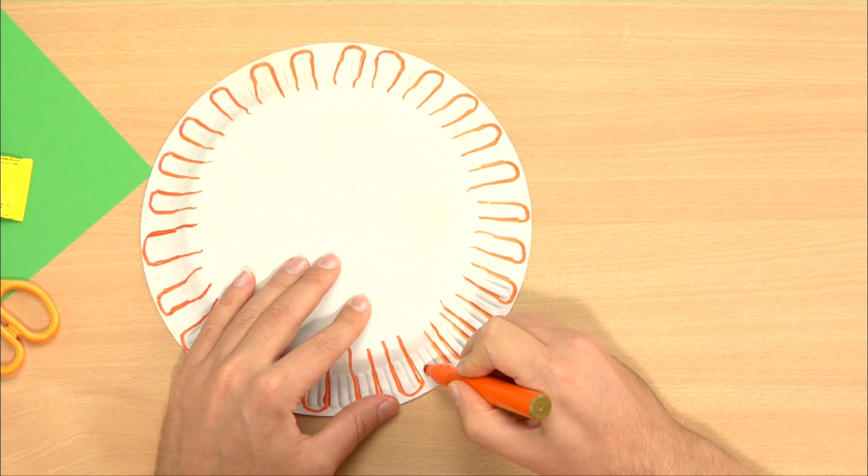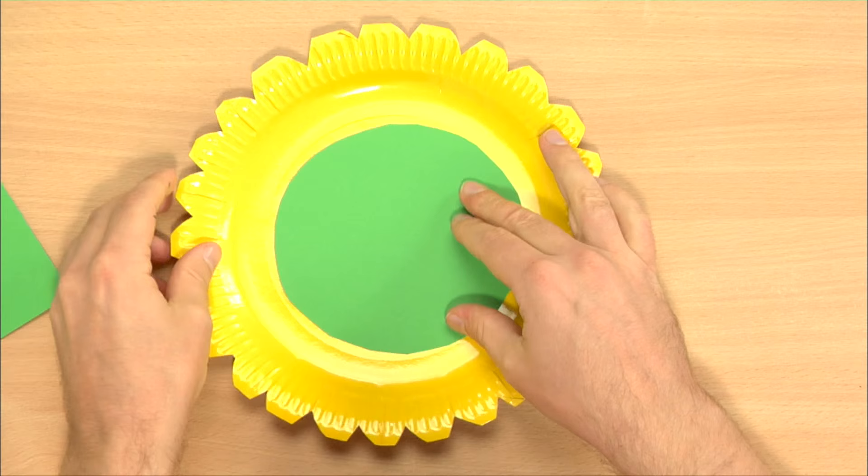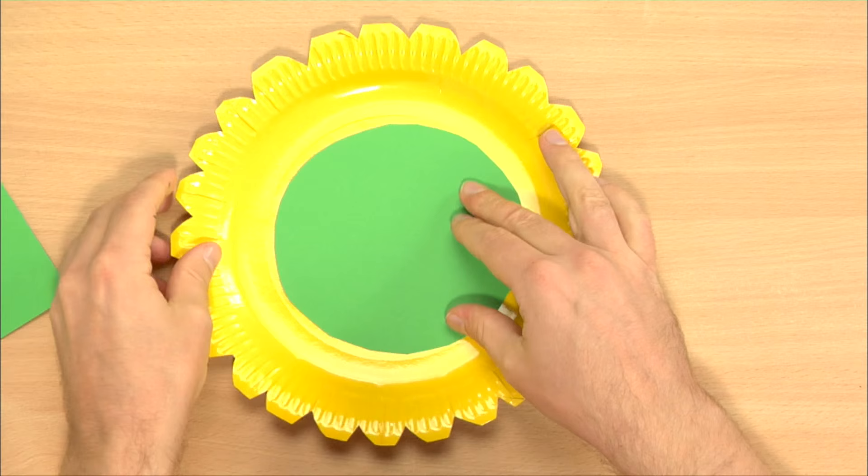Let's have another look. Step 1: Decorate the back of both plates. Step 2: Add the paper circle in front. Step 3: Decorate the paper circle and the border. Step 4: Glue the two plates together.